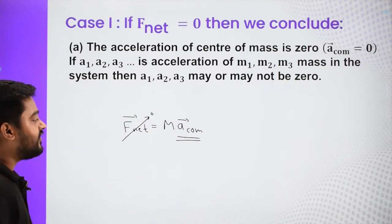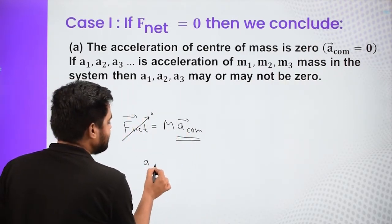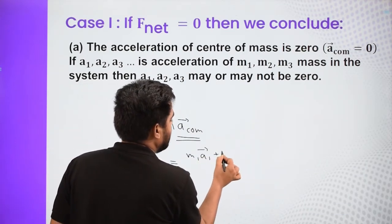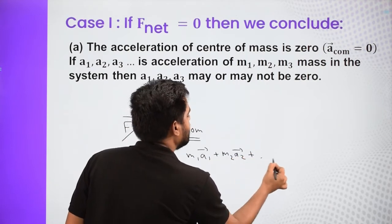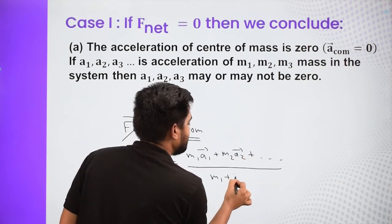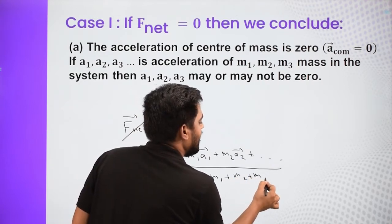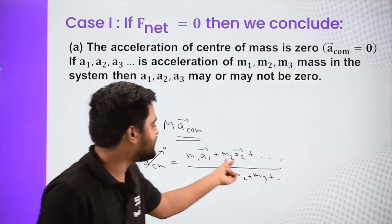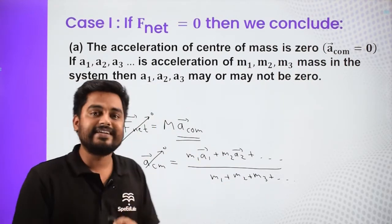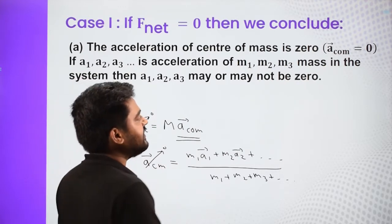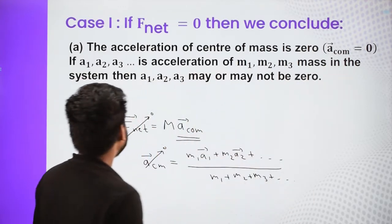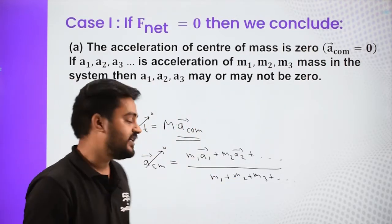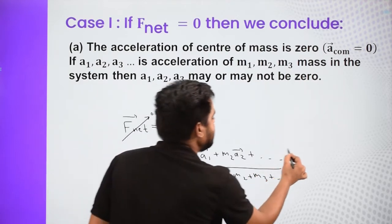But what if a_CM is zero? The acceleration of center of mass is nothing but M1A1 plus M2A2 and so on, divided by M1 plus M2 plus M3 and so on. So if this entire quantity is zero, it is not compulsory that individual accelerations are zero. Even though the entire system has acceleration zero, individual accelerations may or may not be zero — they just need to cancel out overall.